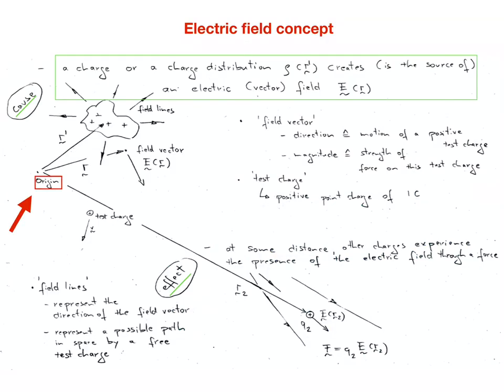The electric field concept is illustrated on this slide with respect to an origin on the left-hand side. Although the situation is symmetric, one may distinguish between a cause and an effect. The cause is a charge or a charge distribution rho that creates an electric vector field E. The position in space of the source charges is identified by the position vector R', indicated here by a red arrow.